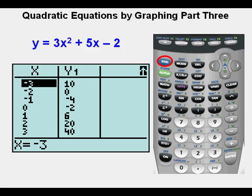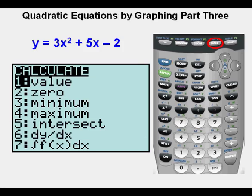He presses second, then the trace key to access the calc menu. He arrows down once to get to the number 2 item, the 0 choice. Presses enter.